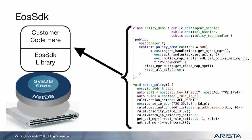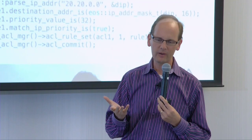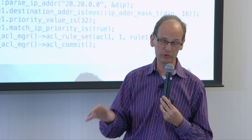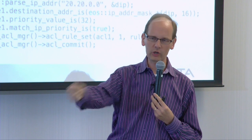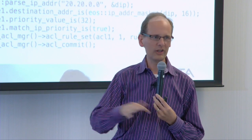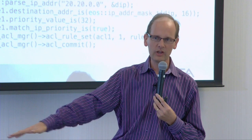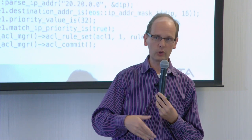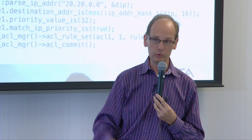Going back to the question about RESTful APIs — I'm not sure any of these is exactly what a traditional RESTful API is. We kind of view eAPI as covering that aspect in a way people are already familiar with, since it's just CLI commands. For the more sophisticated programmers who want to engineer a distributed system, I don't believe get and set over HTTP is the right way to build a coordinated distributed system out of switches and controllers. State streaming is better — NetDB streaming or EOS SDK if you want to get close to the metal.